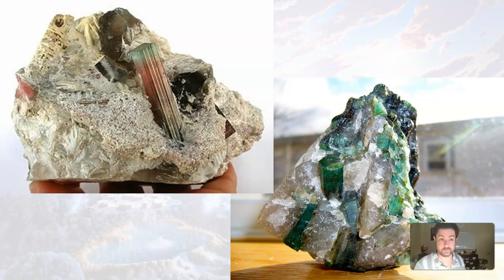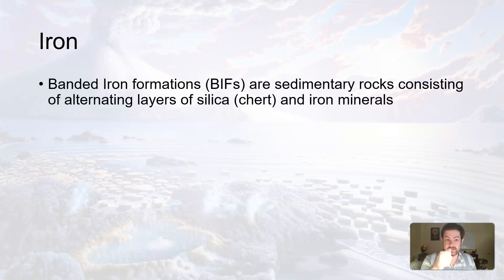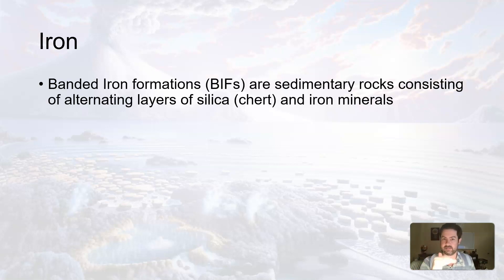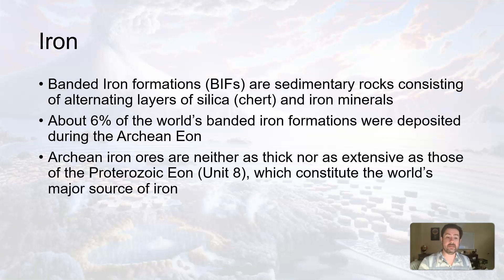There's one more — iron deposits. While they're not super indicative of the Archean, it's worth starting to talk about these because they will come again in unit eight. There's a thing called banded iron formations — sedimentary rocks consisting of alternating layers of silica, which includes high-silica-content quartz-type rocks like chert or jasper, and iron minerals. About 6% of the world's banded iron formations were deposited during the Archean. It's not a lot, but it's going to come back again in a big way in unit eight, which constitutes the world's major source of iron, also in the Precambrian but in the Proterozoic Eon.